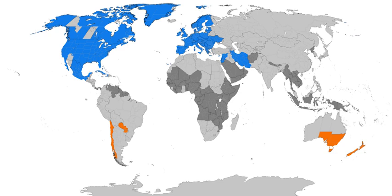After ancient times, equal length civil hours eventually supplanted unequal hours, so civil time no longer varies by season. Unequal hours are still used in a few traditional settings, such as some Mount Athos monasteries. During his time as an American envoy to France, Benjamin Franklin, author of the proverb "early to bed and early to rise, makes a man healthy, wealthy, and wise," anonymously published a letter suggesting that Parisians economize on candles by rising earlier to use morning sunlight. This 1784 satire proposed taxing shutters, rationing candles, and waking the public by ringing church bells and firing cannons at sunrise. Franklin did not propose DST. Like ancient Rome, 18th century Europe did not keep accurate schedules. However, this soon changed as rail and communication networks came to require a standardization of time unknown in Franklin's day.